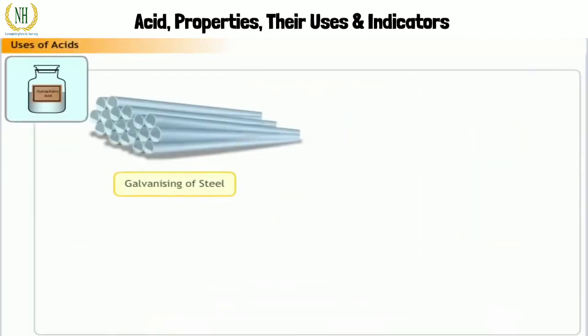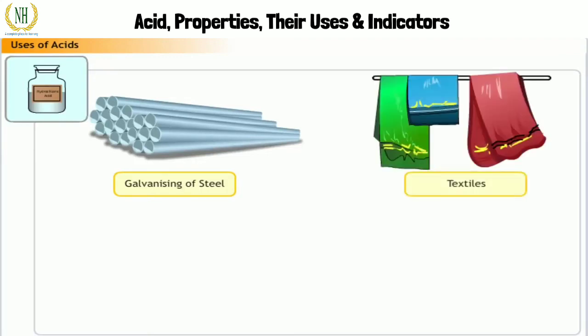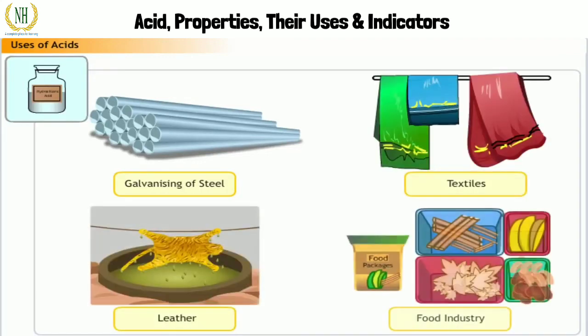Hydrochloric acid is used before galvanizing to remove oxide film from steel and also as a descaling agent for boilers. It is also used in the textile, leather, and food industry.